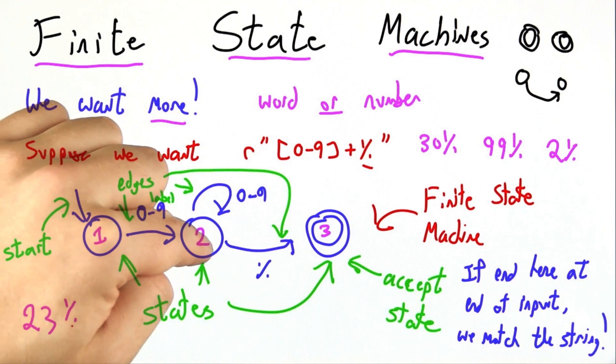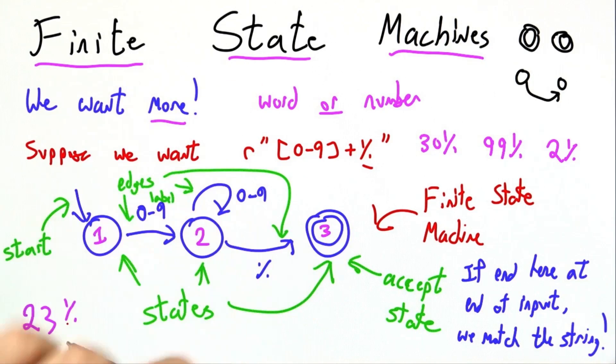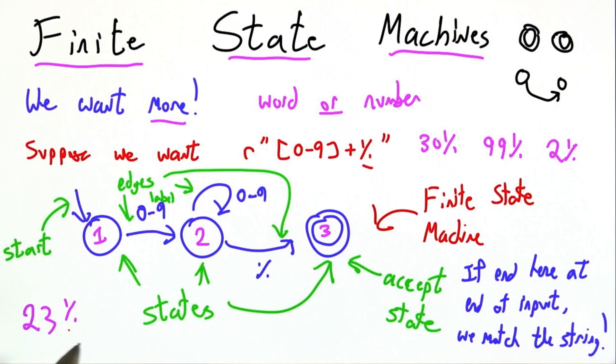Now we see the percent sign, and we end up in state 3, which is an accepting state, so our finite state machine accepts this string, 23%, just like our regular expression would.